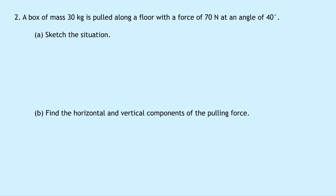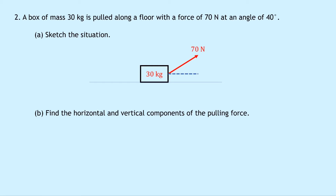Question two says that a box of mass 30 kilograms is pulled along a floor with a force of 70 newtons at an angle of 40 degrees. Part A says to sketch the situation. If you're presented with a question like this in an exam or a test, it's always a good idea to sketch the situation if you're not given a diagram. So we draw our floor, then our box, label 30 kilograms, and show our force acting at an angle of 40 degrees to the horizontal. Part B says find the horizontal and vertical components of the pulling force.